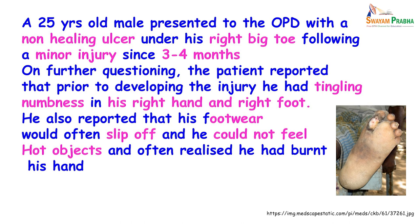Over the months, he also found that his footwear would slip off and he could not feel the heat of hot objects — often developing burns on his hand when drinking a hot cup of tea. So here you have a 25-year-old male with a past history of tingling numbness and loss of sensation in the right hand and foot, and a non-healing ulcer.